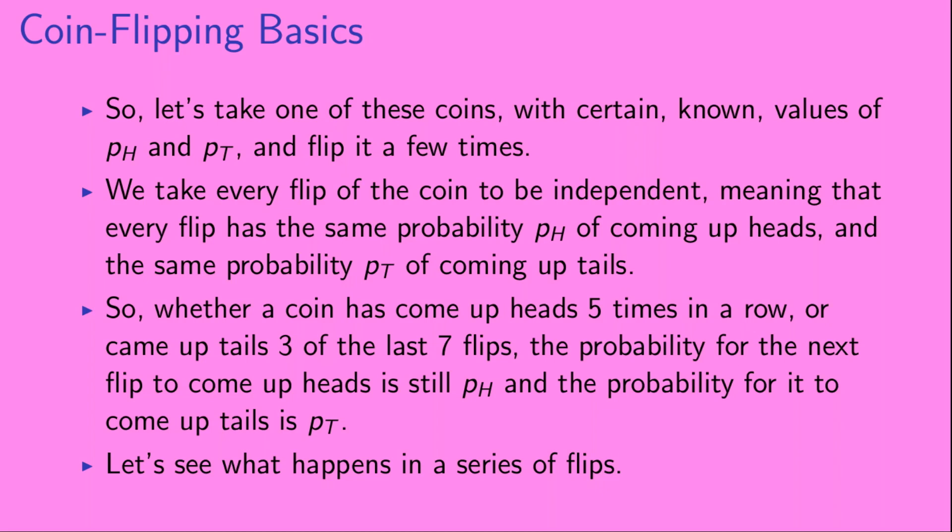So whether a coin has come up heads five times in a row, or came up tails three of the last seven flips, the probability for the next flip to come up heads is still pH, and the probability for it to come up tails is still PT. Let's see what happens in a series of flips.